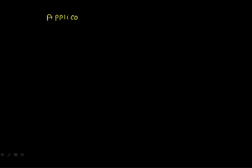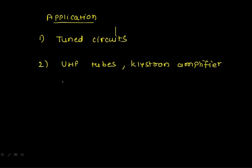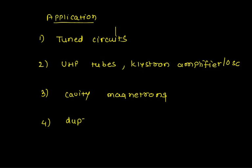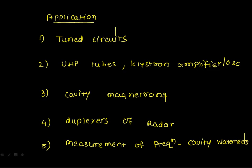The very popular applications of the cavity resonator are: first, as a tuned circuit; second, in UHF tubes; third, in klystron amplifiers — the resonant cavity is based on this principle; fourth, in magnetrons; fifth, in diplexers of radars; and sixth, for high-frequency measurement in cavity wave meters.